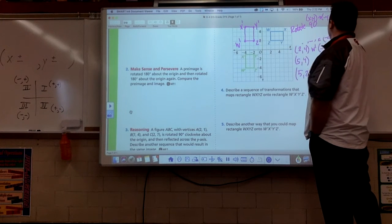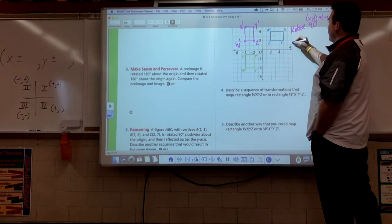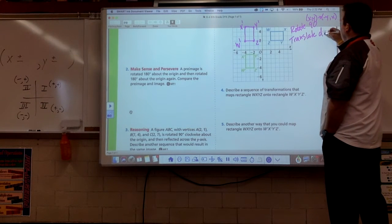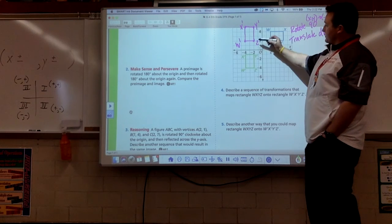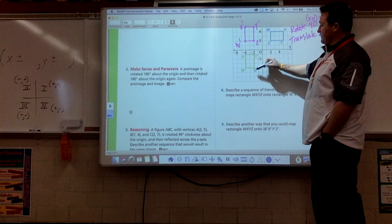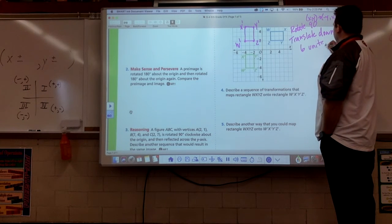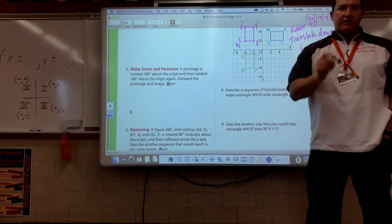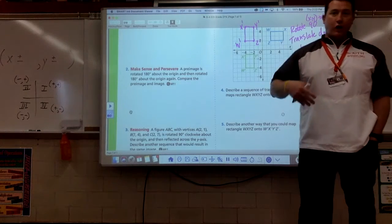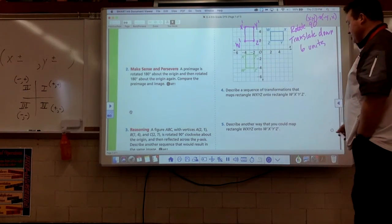What's my last move I need to do? Well, we just got to slide it or translate it down. So I want to translate down how many units? Let's go from Z prime down here. So 1, 2, 3, 4, 5, 6. Down 6 units. So guys, moral of the story, if you mess up, no big deal. Just get rid of it, go back to square 1. That was our sequence there.